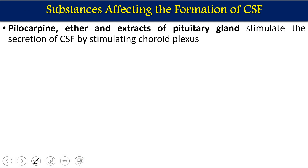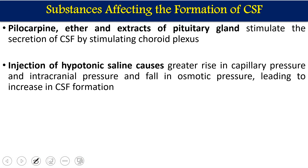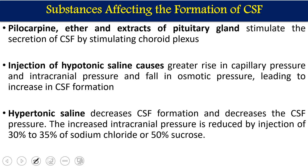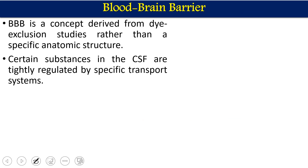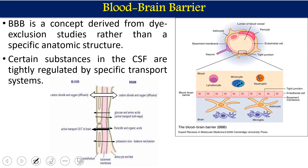Some substances affect CSF formation: pilocarpine, ether, and extracts of the pituitary gland stimulate CSF secretion by stimulating the choroid plexus. Injection of hypotonic saline causes greater capillary pressure, increased intracranial pressure, and fall in osmotic pressure, leading to increased CSF formation. Hypertonic saline decreases CSF formation and decreases CSF pressure. Isotonic saline also stimulates CSF formation.